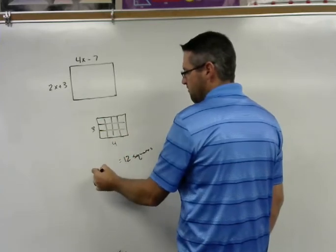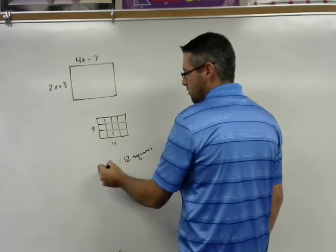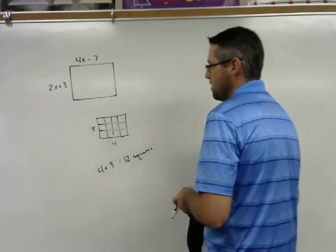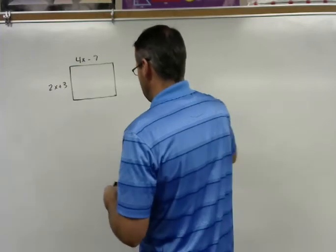Well, why is that? Because we have 4 across and 3 down, so 4 times 3 is 12 squares. So the way we find area is by multiplying the length and the width.